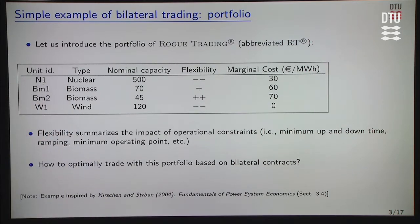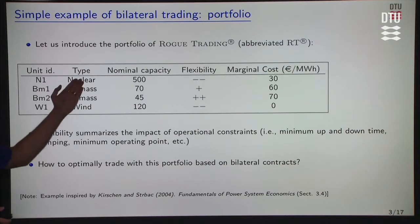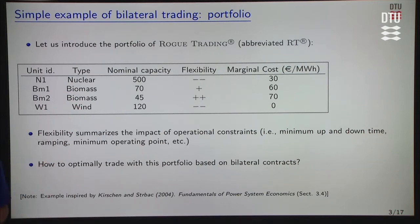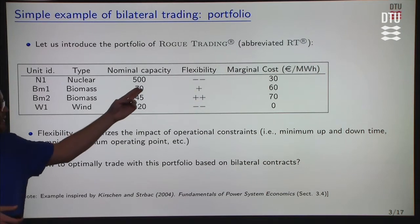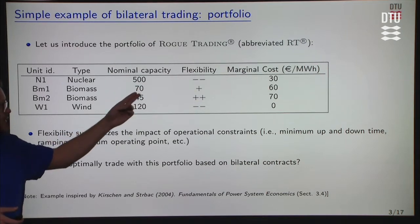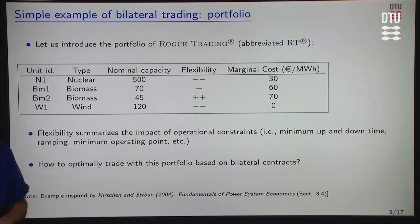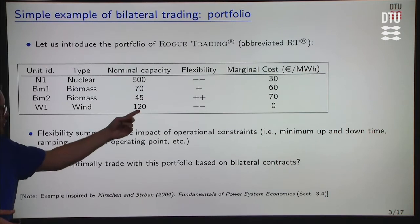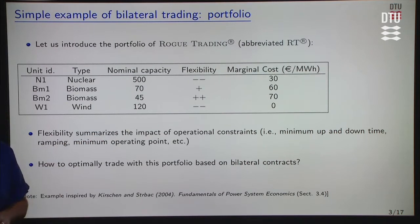Rogue Trading has a portfolio with four units: a nuclear unit, two biomass units, and a wind unit. The nuclear unit has a nominal capacity of 500 megawatts. The two biomass units have capacities of 70 and 45 megawatts respectively. And finally, the wind capacity is 120 megawatts.